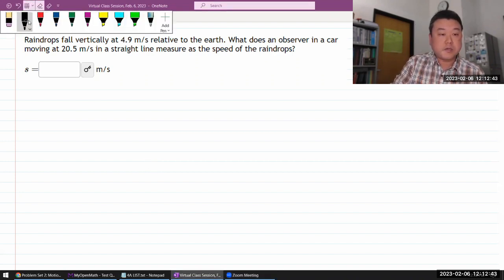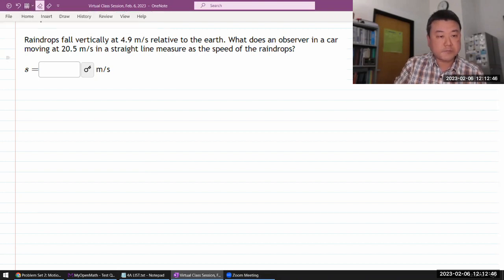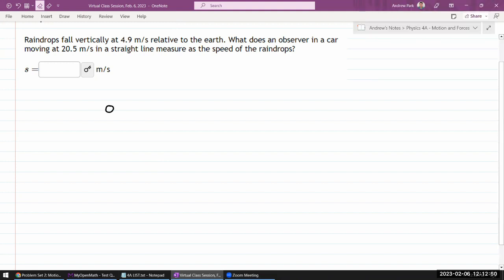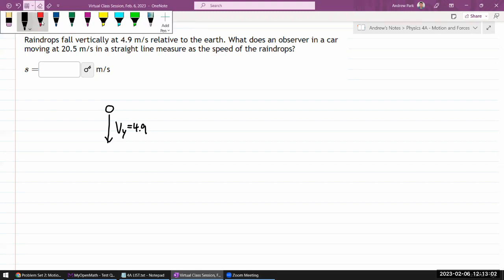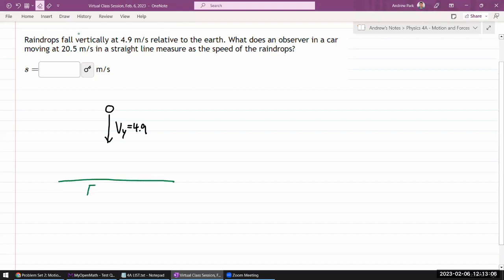So it says it's talking about some raindrops dropping vertically at some speed. And I think this is the speed of its vertical speed that it's saying. And since it's saying relative to Earth, let me just draw a representation of Earth so I have some way to think about it. When I answer physics questions, I like to kind of doodle to make sure I have a correct mental image of what the question is describing.